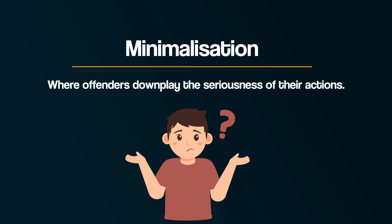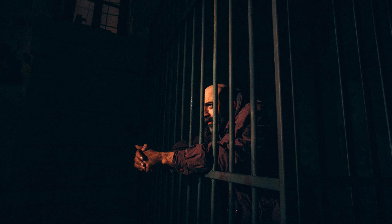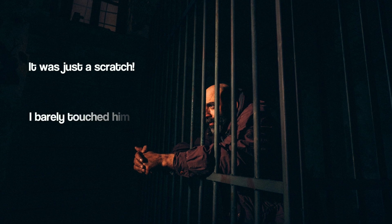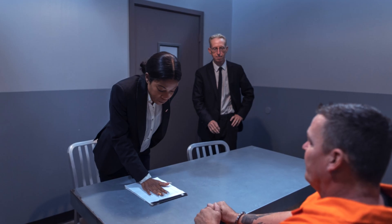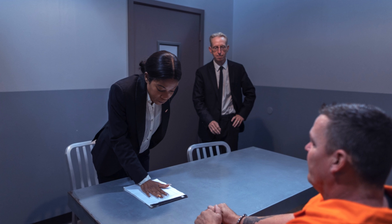Another cognitive distortion is called minimalization. This is where offenders downplay the seriousness of their actions. For example, an offender might suggest that the injuries they caused during an assault were mild, even if the victim was severely hurt. By minimizing the impact of their crime, offenders once again reduce feelings of guilt — convincing themselves that what they did wasn't really that serious — and this allows them to maintain a positive view of themselves.